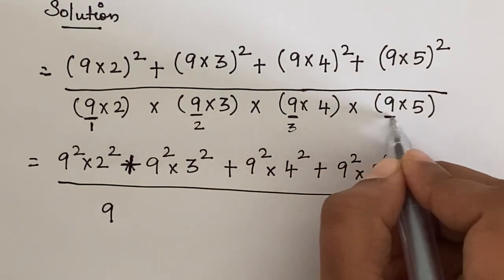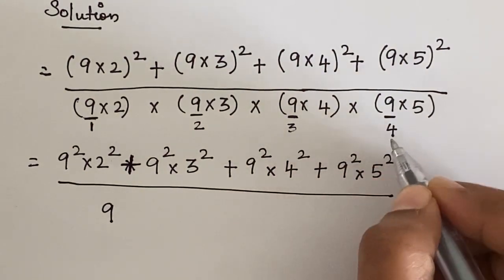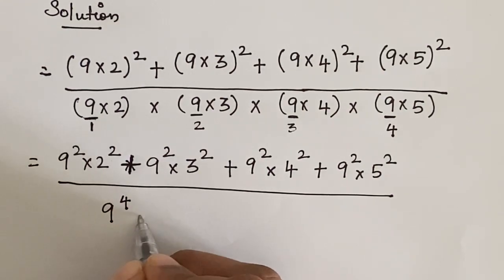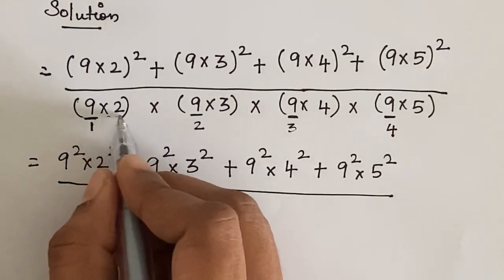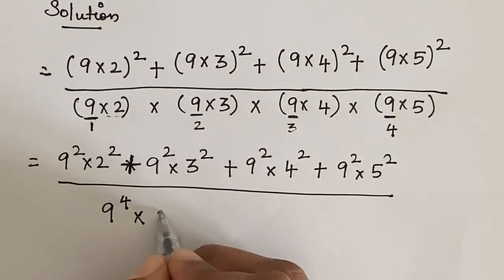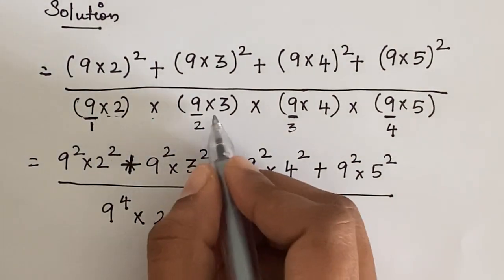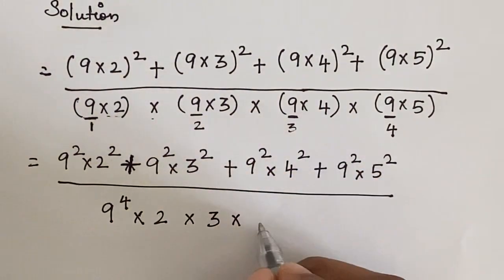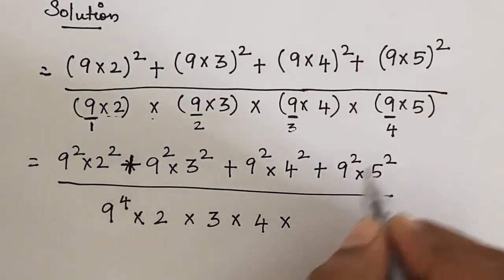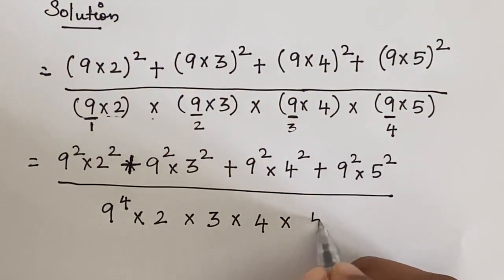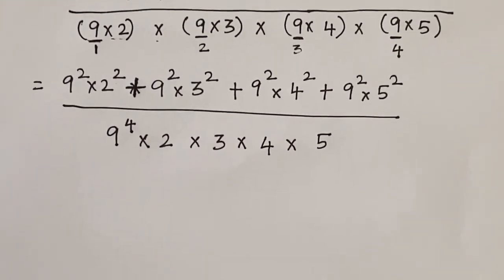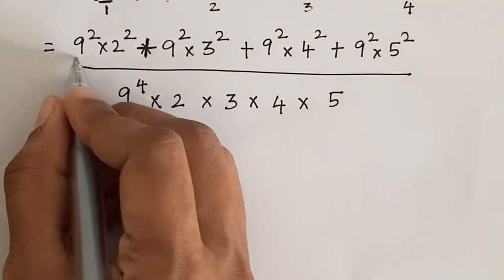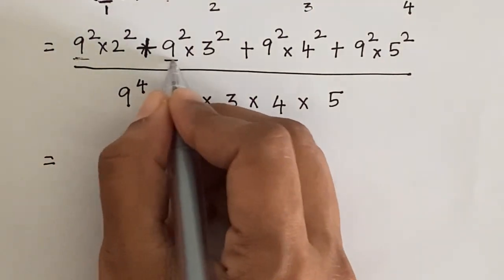We count the number of 9s — we have 1, 2, 3, and 4 — so in the denominator we have 9 to the power 4, times 2 times 3 times 4 times 5. And in the numerator we have 9 squared in common.